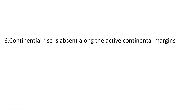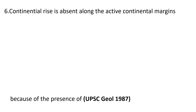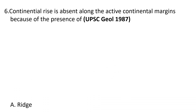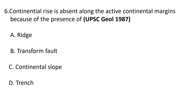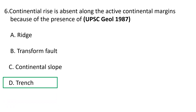Sixth question: continental rise is absent along the active continental margins because of the presence of — a) a ridge, b) transform fault, c) continental slope, and d) trench. The correct answer is d) trench.